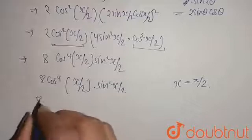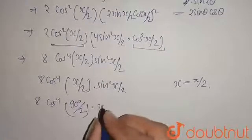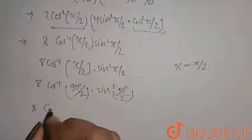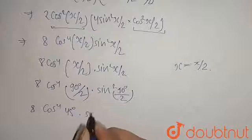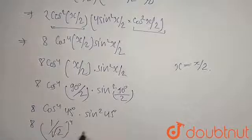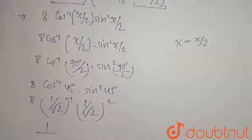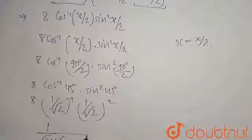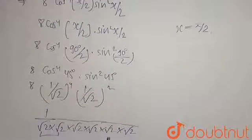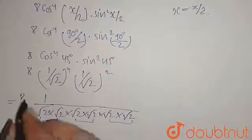Substituting x = π/2 (which is 90°): 8cos⁴(45°)·sin²(45°). Since cos45° = sin45° = 1/√2, this becomes 8·(1/√2)⁴·(1/√2)². That is 8·(1/√2)⁶. Since (√2)⁶ = 2³ = 8, the result is 8/8 = 1.